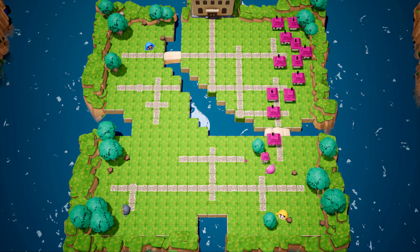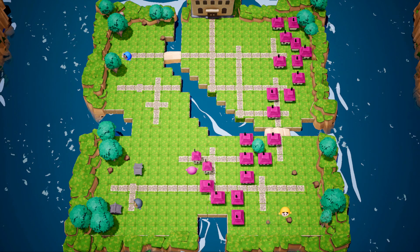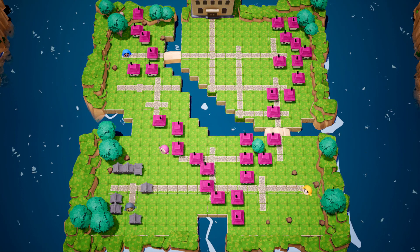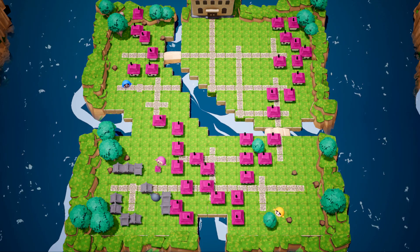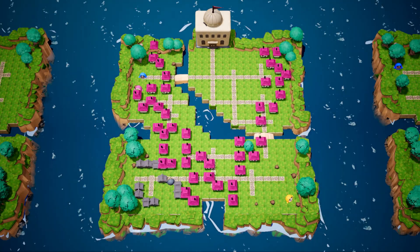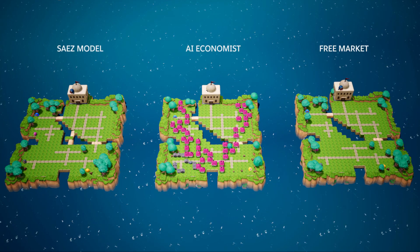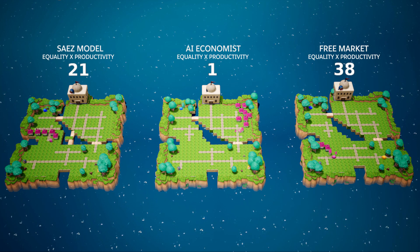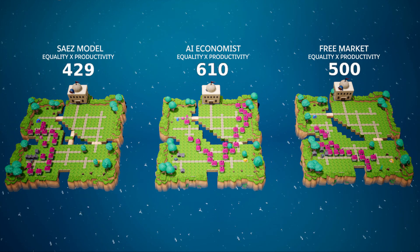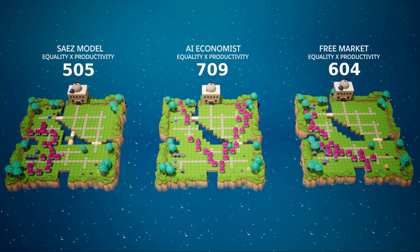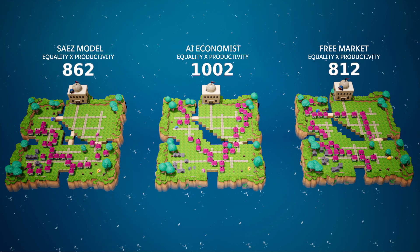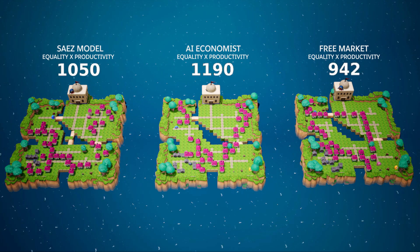Here is one of millions of economic simulations, in which AI agents collect and trade wood and stone and build houses. We compare many simulations where the AI agents and AI Economist continuously learn to adapt to each other. Each AI agent trains to maximize its own monetary outcome, while the AI Economist optimizes social welfare for all.